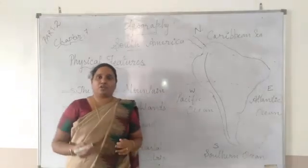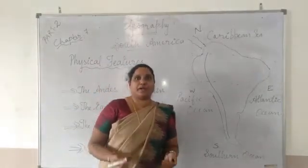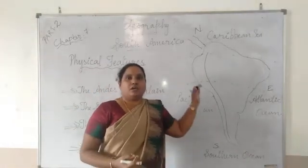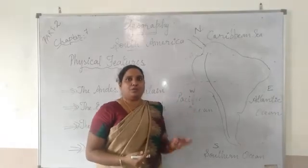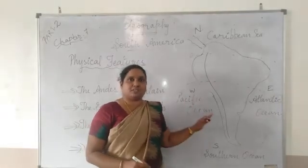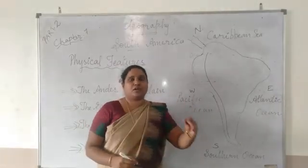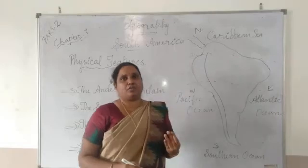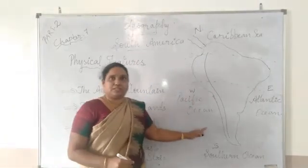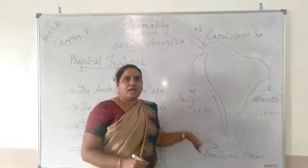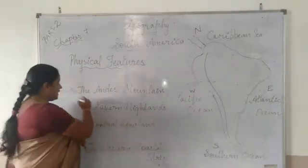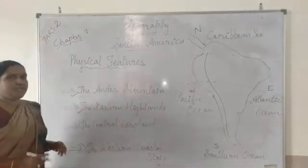Three important volcanic mountains are Cotopaxi, Cayambé, and Chimborazo. Among these, Cotopaxi is very important because it is considered the highest active volcanic mountain in the world. Now, we will move to the next one, which is the Eastern Highlands.